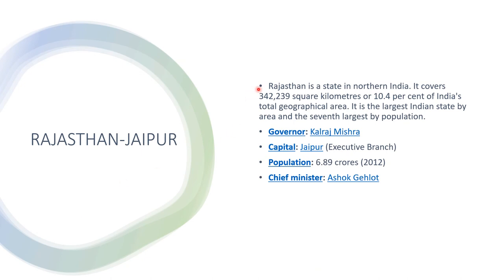The next one is Rajasthan, capital Jaipur. Rajasthan is a state in northern India. It covers 342,239 square kilometers, or 10.4% of India's total geographical area. It is the largest Indian state by area and the seventh largest by population. The governor is Kalraj Mishra, the capital is Jaipur, the population is 6.89 crores in 2012, and the Chief Minister is Ashok Gehlot.